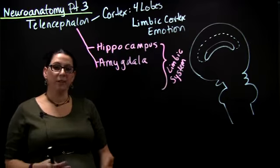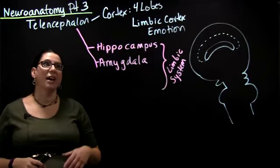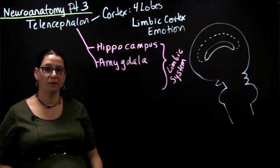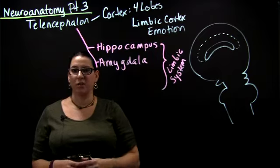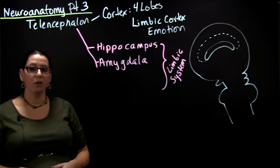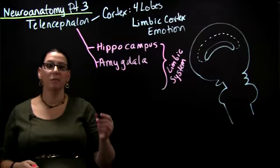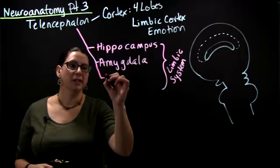The telencephalon, the phylogenetically newest part of the brain, has the four lobes of the cortex with their sensory and motor functions as well as the limbic cortex. And then there are also these subcortical structures that are part of the limbic system: the hippocampus, the amygdala, and also the nucleus accumbens.